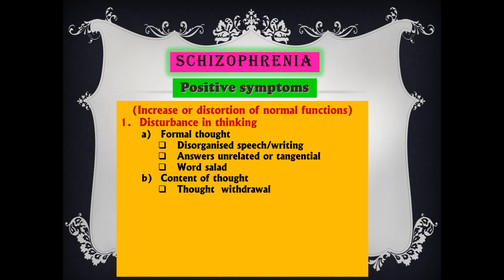Then there is content of thought. That includes thought withdrawal — as if somebody is withdrawing my thoughts — and thought insertion — somebody is putting thoughts into my mind. Then delusion of control. For delusion we have to see there are three grades: idea, belief, and delusion. A belief held so strongly that in spite of others correcting it, it does not go away — that is delusion.